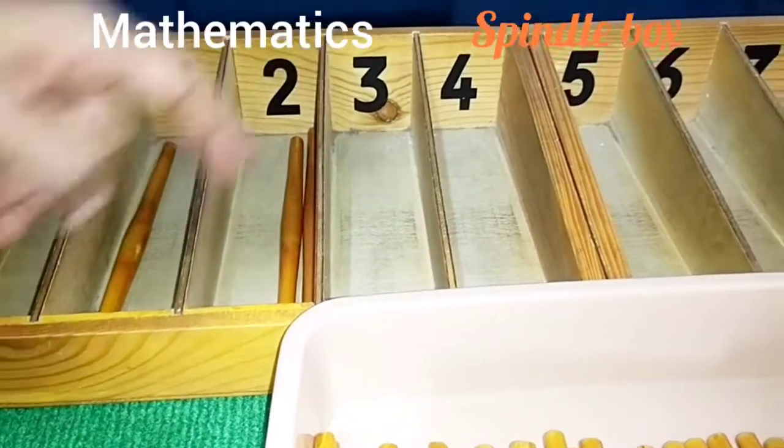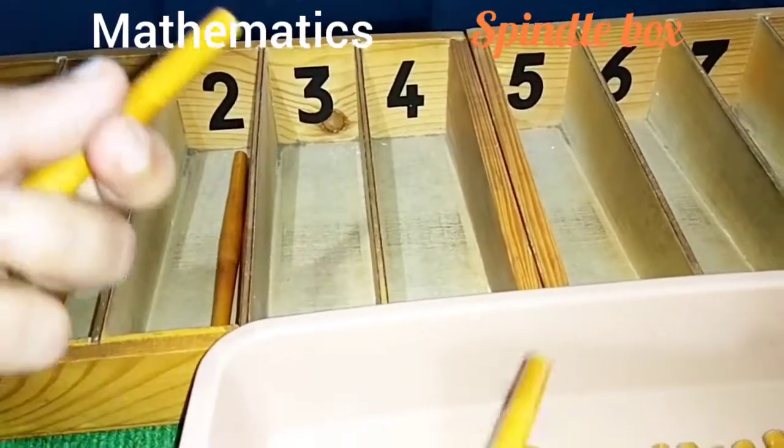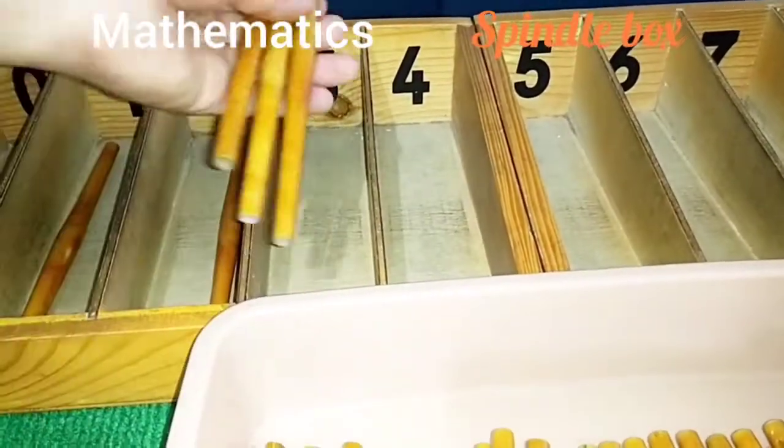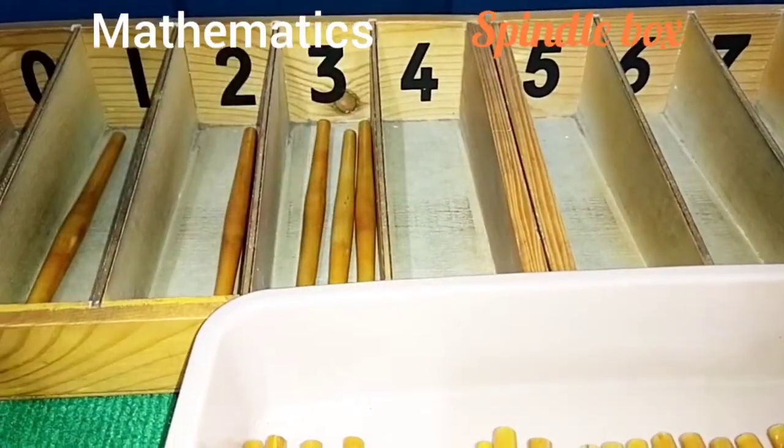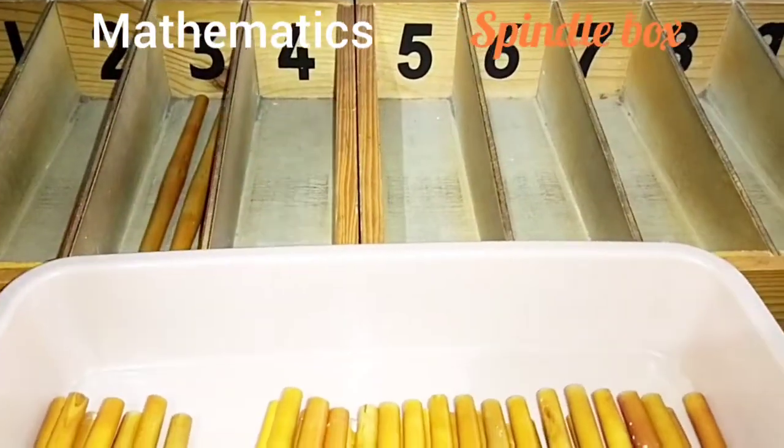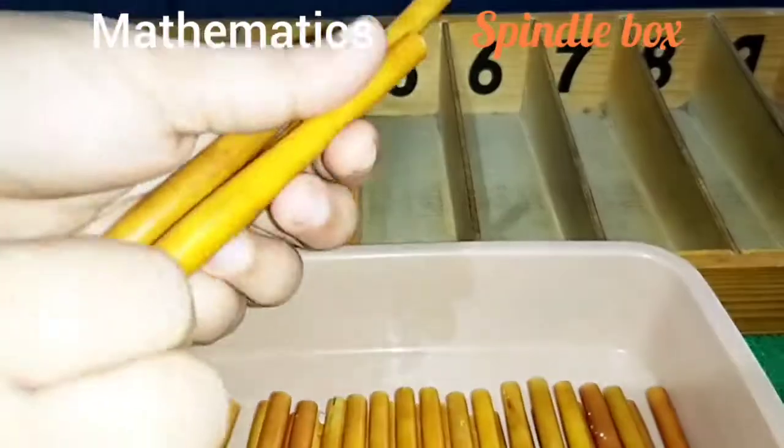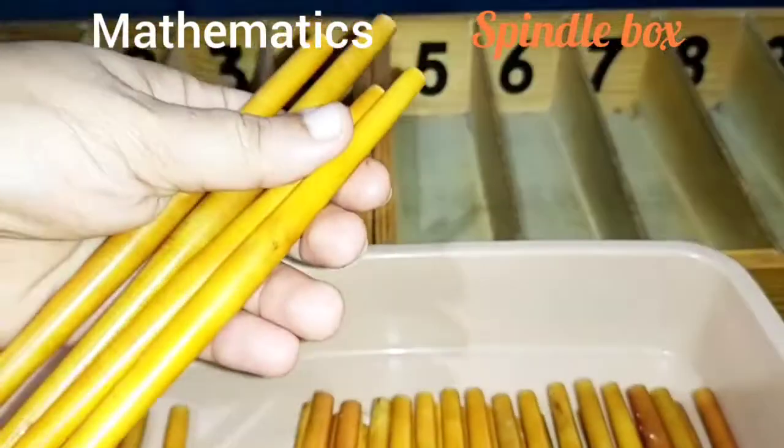What is next? Three. One, two, three. Next number is four. So you put four spindles there. One, two, three, four. Four spindles.